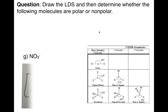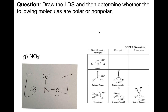Last example: NO3 minus. This is a bracketed one because it's an ion. I have three atoms and no lone pairs of electrons on my central atom if you drew it correctly, so that means NO3 minus has a trigonal planar geometry and is therefore non-polar.